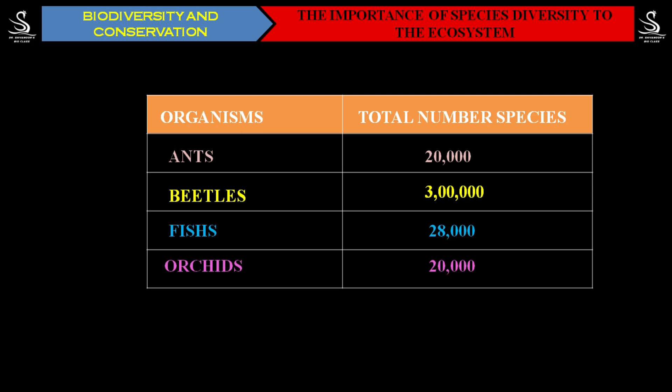Now the question arises: does the Earth really require 20,000 different types of ants? If one or two species become completely extinct from the planet, is it going to make any difference to us? There are 300,000 different species of beetles — what is the use of all these beetles? If one or two beetle species go extinct, is it going to bring any difference? That is what we are going to understand here.